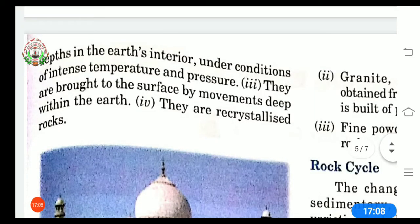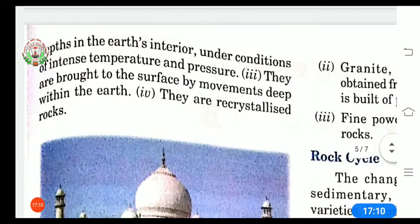Third, they are brought to the surface by movements deep within the earth. So how they are coming to the surface, they are coming because of the movement that is going on within the earth. Fourth, they are recrystallized rocks. Recrystallized means to become definite and clear.